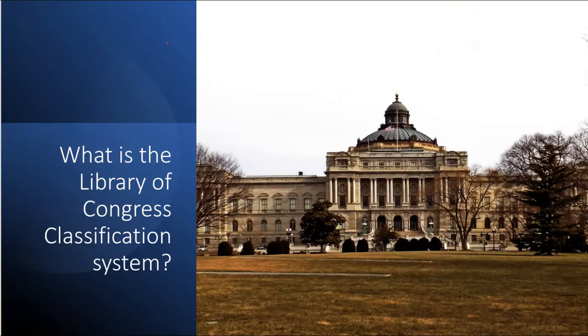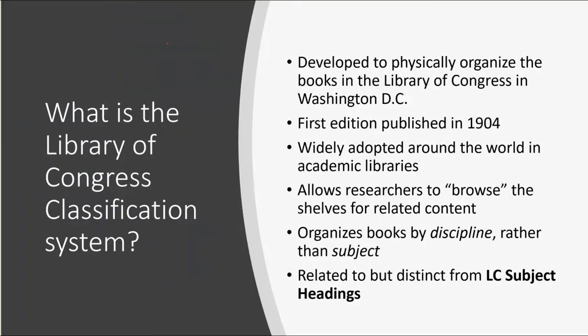But what is the Library of Congress classification system and how can it help you become a more effective researcher? First, some background. It was developed to physically organize the books at the Library of Congress in Washington DC. The first edition was published in 1904, and since then it has been widely adopted in academic libraries around the world.